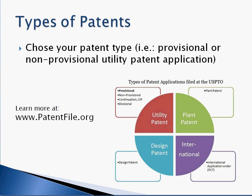Before we jump into software patents, let's talk a little bit about the different types of patents you can choose from when you have a new invention. If your new invention was a new type of plant, you would file a plant patent. If your new invention was a new design, like a new Coke bottle design, you would file a design patent. What we're going to be talking about here for software patents are called utility patents, which means they're something that has a unique usefulness to them. There are different types of utility patent applications: a provisional patent application, a non-provisional, continuation, CIP, and divisional. If you want to learn more about the different types of patent applications, you can visit patentfile.org.